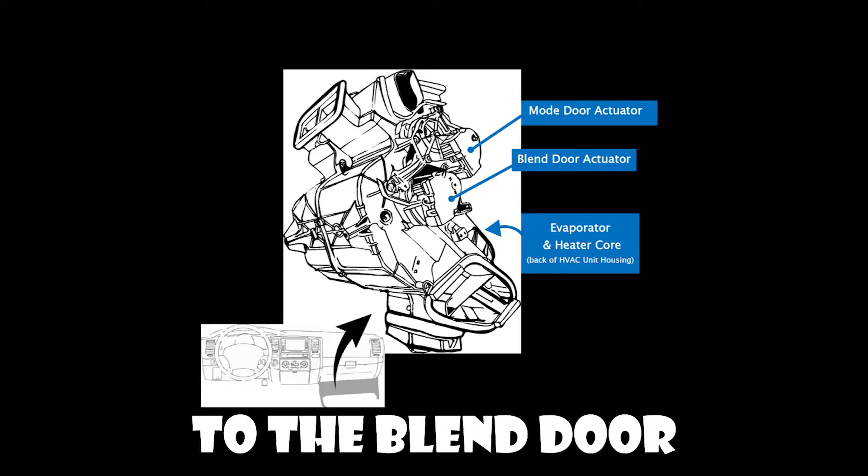Trouble codes associated with bad blend door actuators include B10A8, B11C5, and B11C6. The blend door actuator is typically located on the climate control case behind the dashboard, often near the heater core and evaporator, and its exact position can vary depending on the make and model of the vehicle.